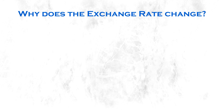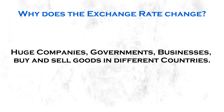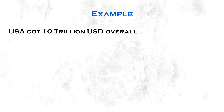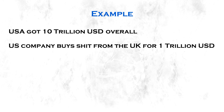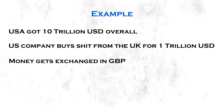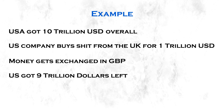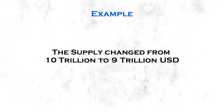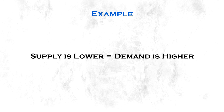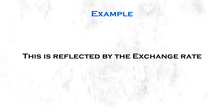Why does the exchange rate change? Well, huge companies, governments, and businesses buy and sell goods in different countries and they have to trade huge amounts of money to do this. For example, if the US had 10 trillion dollars overall and a huge US company buys goods in the UK for 1 trillion dollars, that money gets exchanged into British pounds. Now the US has only 9 trillion dollars left — the supply changed from 10 trillion to 9 trillion. Lower supply means demand is higher, which means the price of the US dollar goes up, and this is reflected in the exchange rate.